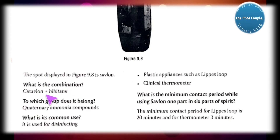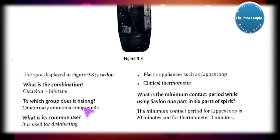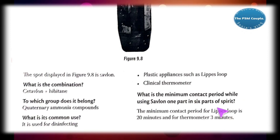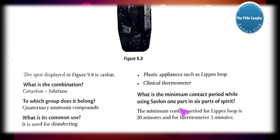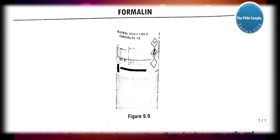Next is Savlon. What is its combination? Savlon is a combination of cetavlon and hibitane. It belongs to the quaternary ammonium compounds group. Its use: disinfecting plastic appliances such as IUCD (Lippes loop) and clinical thermometer. Minimum contact period: for Lippes loop — 20 minutes; for thermometer — 3 minutes.